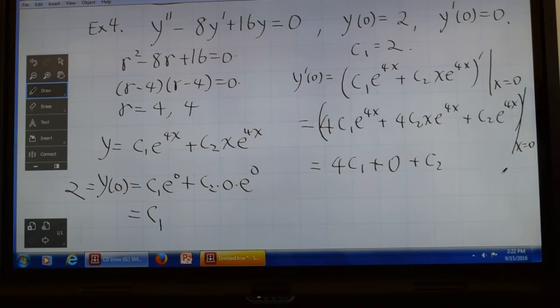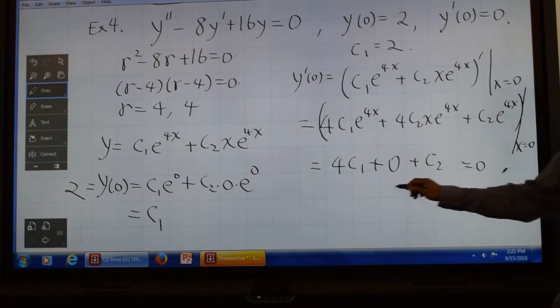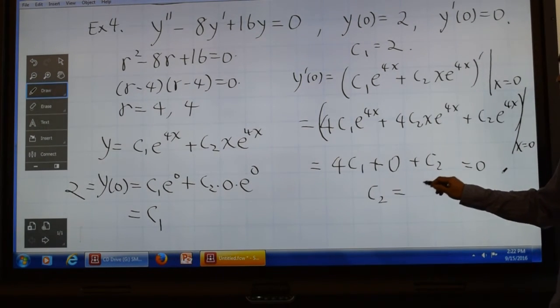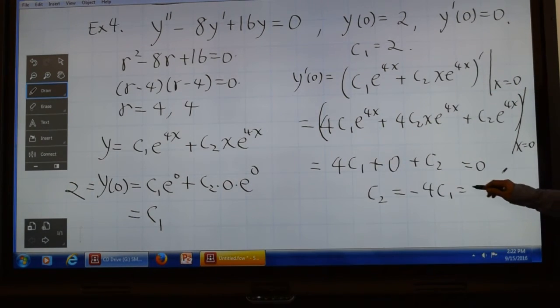Now what is this supposed to be? 0. It has to equal 0. So this has to equal 0, which means c2 is negative 4c1. And because c1 we already know is 2, it's negative 4 times 2, which is negative 8.